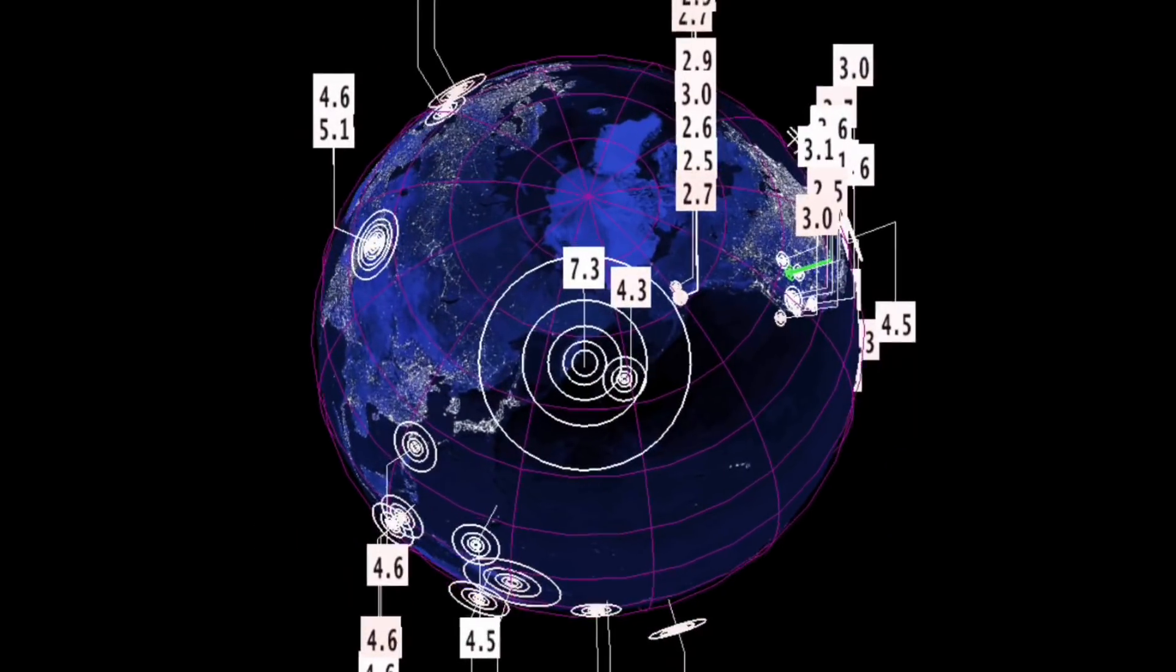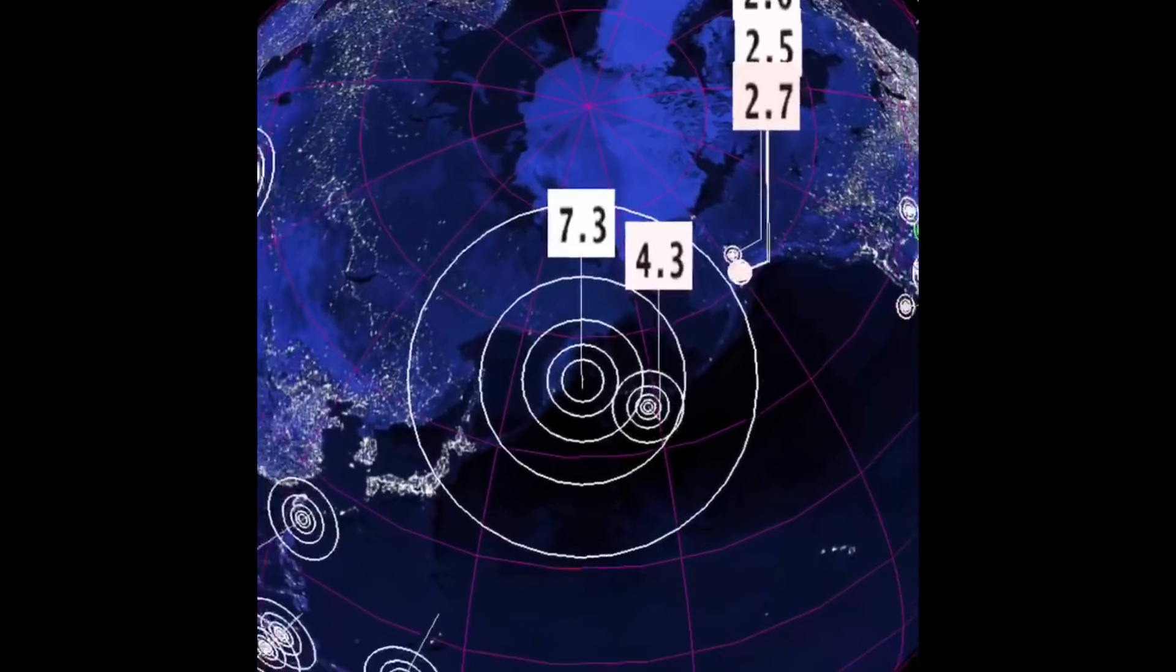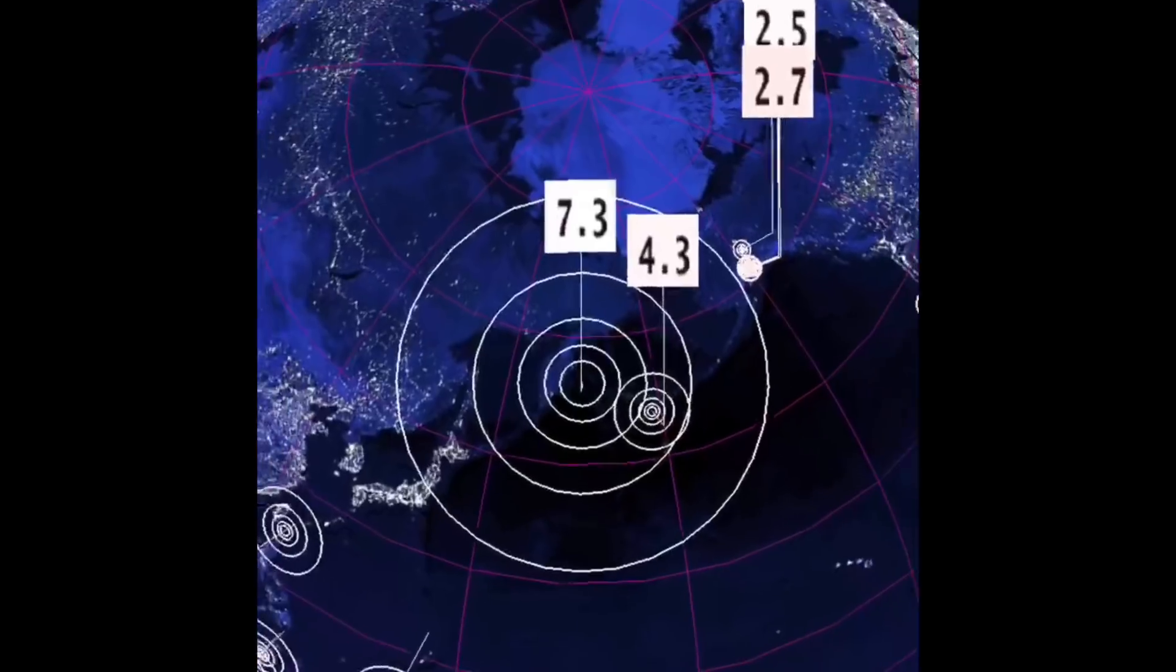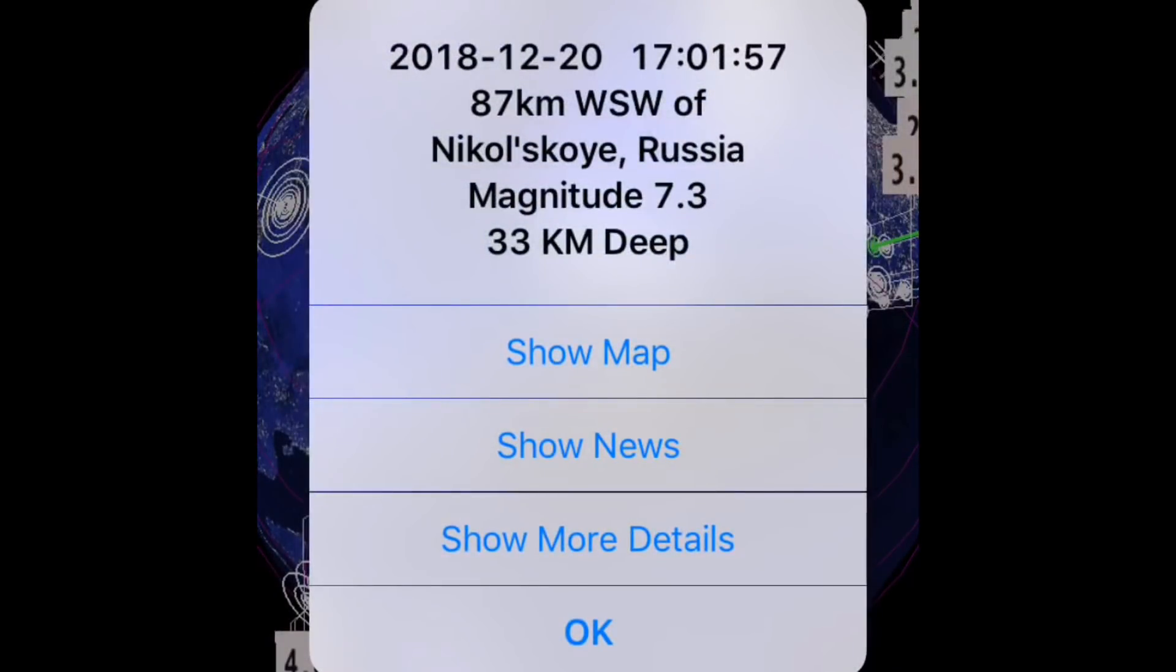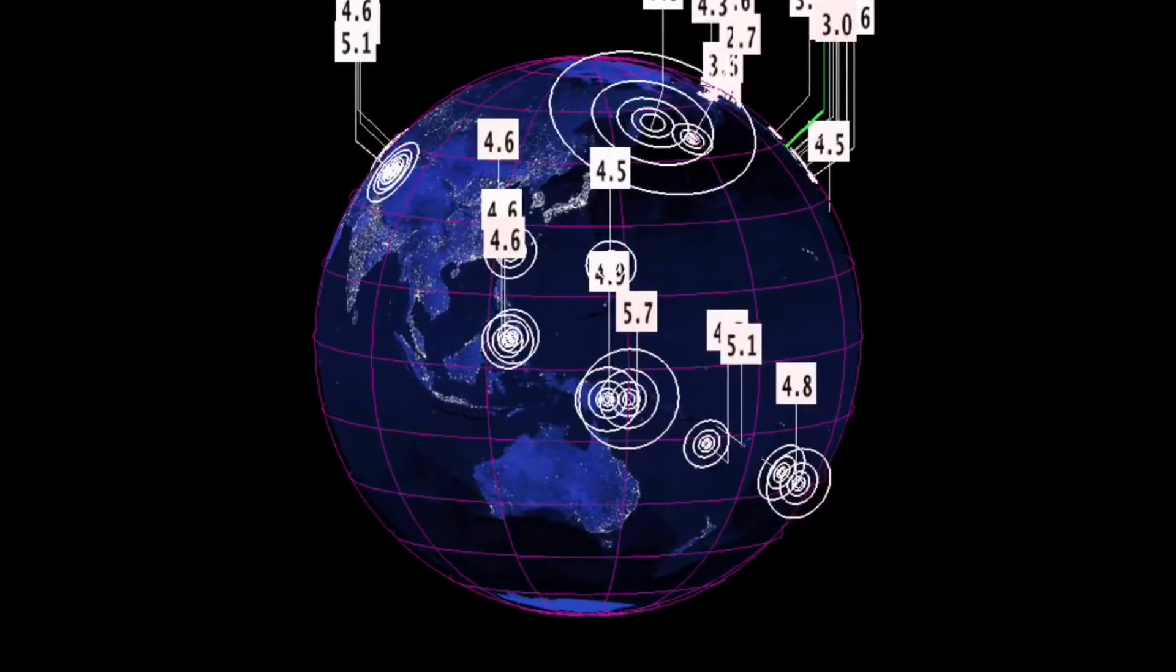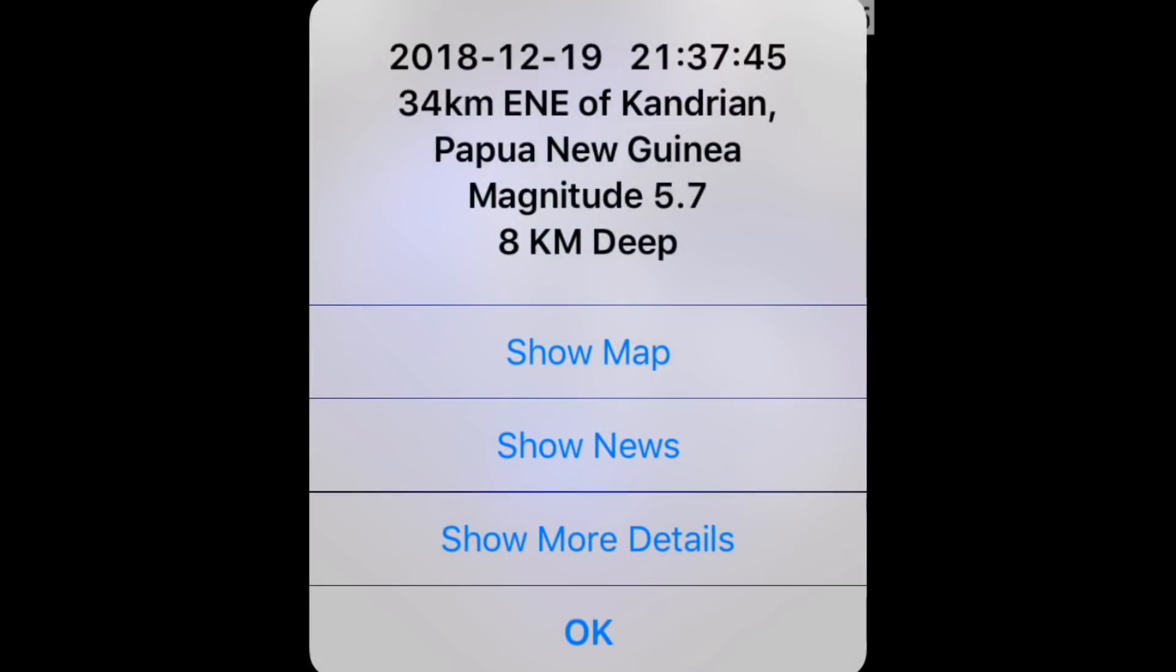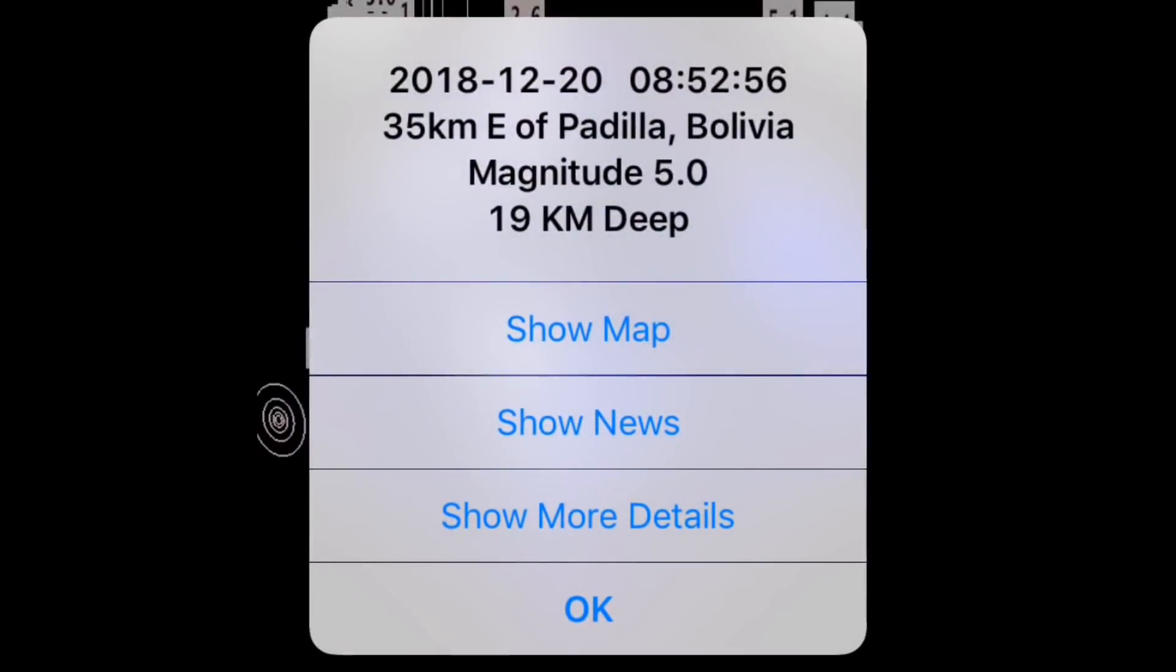Just going to show you here on the earthquake map, 7.3, some places calling it a 7.4 near Nikolsky, Russia. Very large earthquake sending out tsunami warnings, so please stay aware and prepared. This was the quiet region and boom, 7.3. Wow.